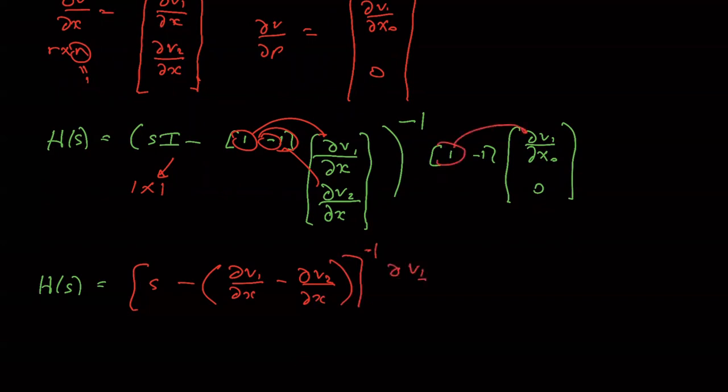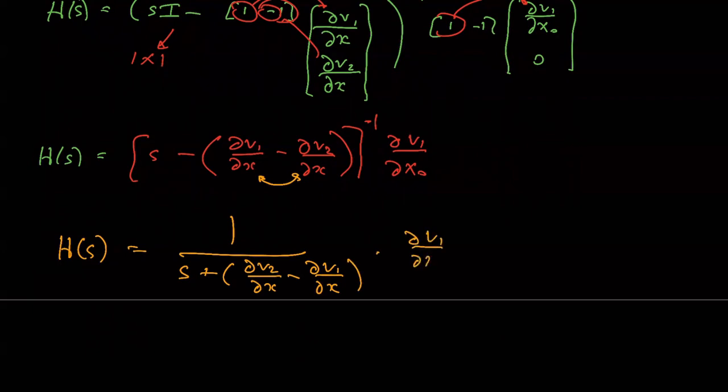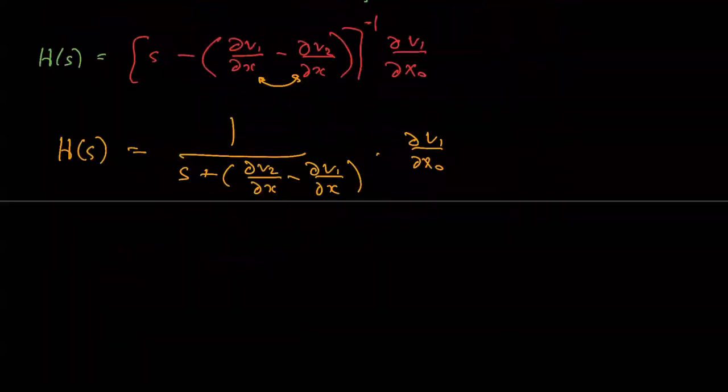And then this is just dv1 dx0. So this ultimately turns into one over s plus, I'll swap these around to take into account the sign change, dv2 over dx minus dv1 dx, and then it's dv1 over dx0. So that's the transfer function.